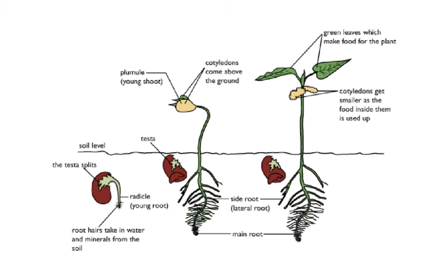Now let's look at the different steps of germination — how does a seed germinate? Whenever the right factors are present, the seed absorbs water and minerals from the soil, the testa splits, and the radicle grows downward as the young root. In the second stage a few days later, the root system has developed with a main root and side roots, and the testa has fallen off.